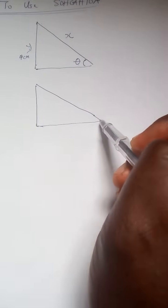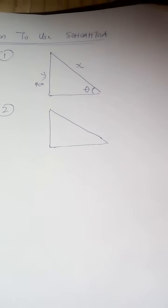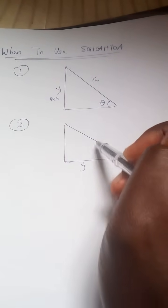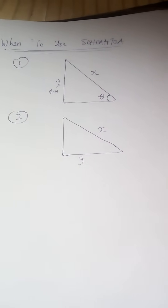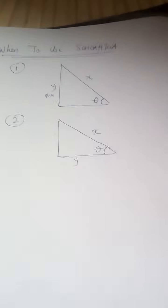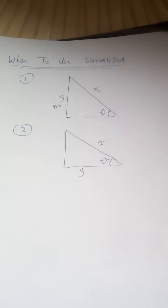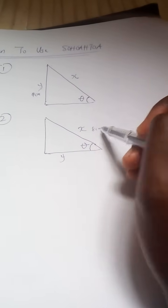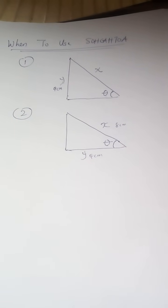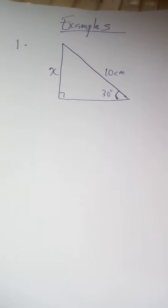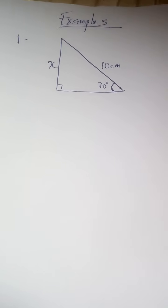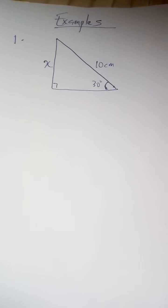The second situation where you use SOHCAHTOA is when you have two sides and are told to find the angle. They can give you, say, 8 cm and 4 cm and ask you to find the angle. In Example 1, we've been given two sides and an angle, so we're going to use SOHCAHTOA.